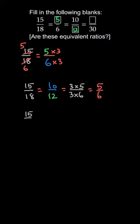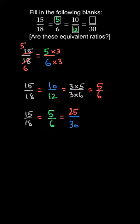Last वाले को 15 by 18 से या 5 by 6 से compare करते हैं — blank divided by 30 के साथ। 6 के साथ क्या multiply करने पर 30 आता है? 6 into 5 = 30। तो 5 के साथ भी 5 multiply करो — 5 into 5 = 25। तो उस box में 25 लिखेंगे। इस तरह तीनों boxes 5, 12 और 25 से fill होंगे। Thank you.